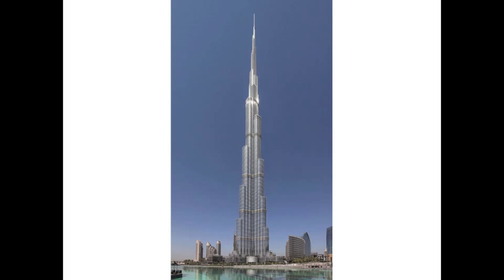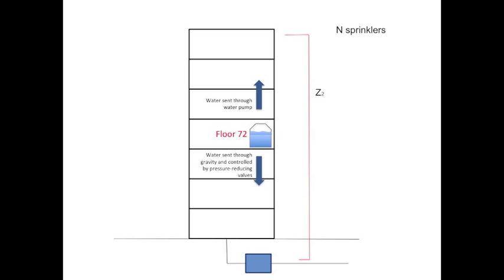Let's look at an example. The Burj Khalifa is the tallest building on earth. The sprinkler system of this building is delicately designed. The main water tank and water pump of this building is located on floor 72.